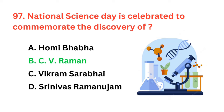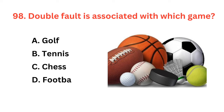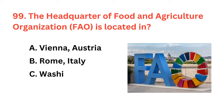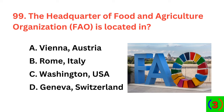Double fault is associated with which game? The correct answer is option B: Tennis. The headquarter of the Food and Agriculture Organization is located in? The correct answer is option B: Rome, Italy.